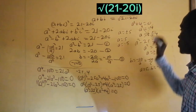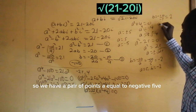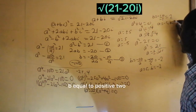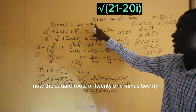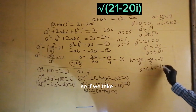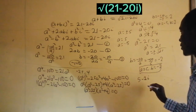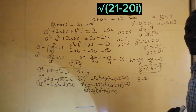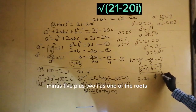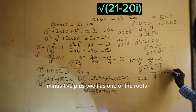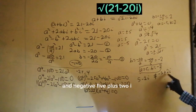If a equal to negative 5, we are going to have b equal to negative 10 divided by negative 5, which gives positive 2. So we have the pair a equal to negative 5, b equal to positive 2. The square root of 21 minus 20i equals a plus bi, so if we take the first pair we have 5 minus 2i as one root, and if we take the second pair we have minus 5 plus 2i as the other root.